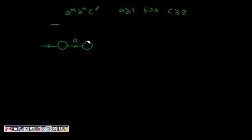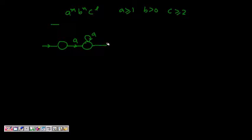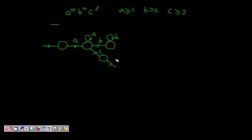Now b must be greater than or equal to 0, meaning I might not have a 'b' at all. So I can have a 'b' or I can skip it entirely. If I get a 'b', I can keep on getting more b's — that is fine. But if I get a 'c' directly, that is also fine here, and I should get at least two c's. So I go to this state and this becomes my final state.